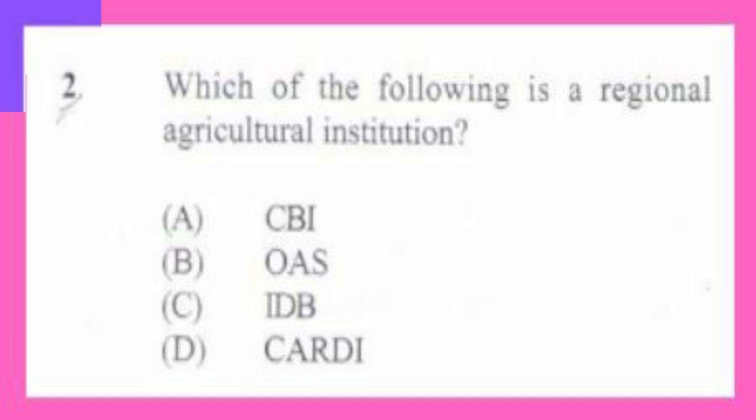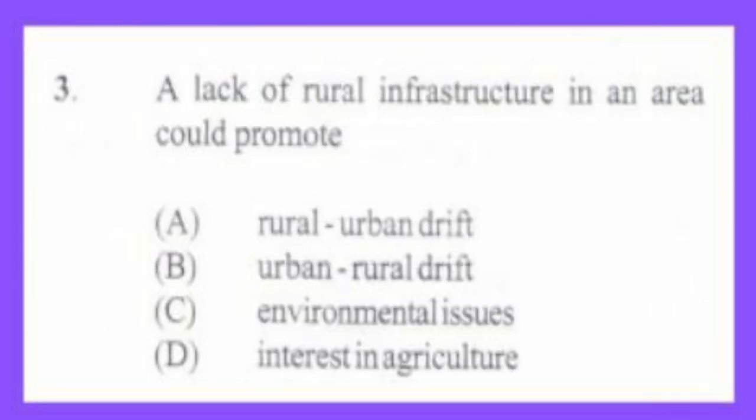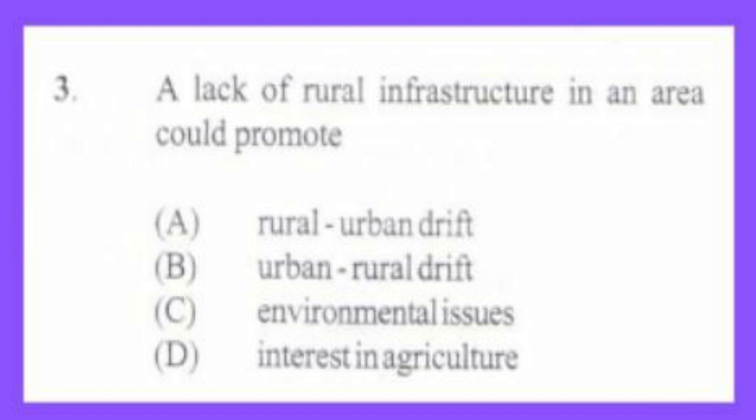Question number 3. A lack of rural infrastructure in an area could promote: A. Rural to urban drift, B. Urban to rural drift, C. Environmental issues, D. Interest in agriculture. The answer is A, rural to urban drift. When there is a lack of infrastructure in an area, that's a disadvantage. The infrastructure means the physical structures that make your life easy, so persons will move from rural areas because they are underdeveloped.